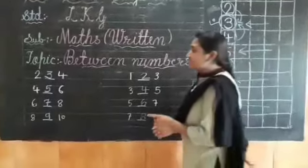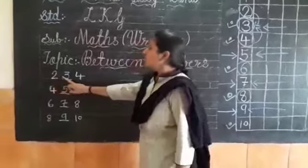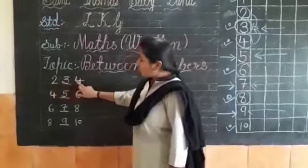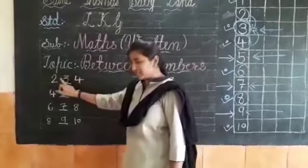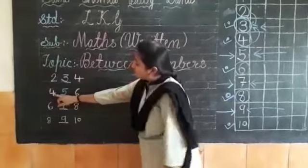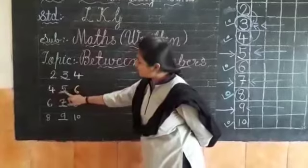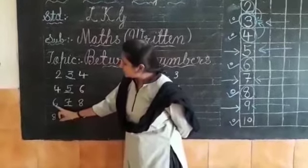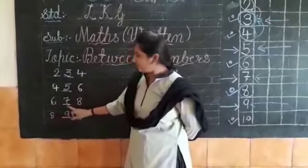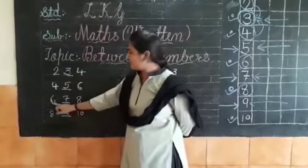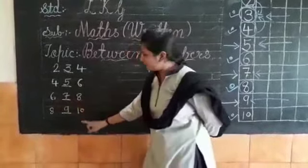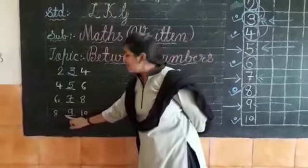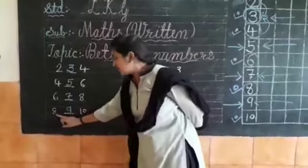Let's repeat this exercise. In between of two and four, which number is there? Three — because after two is three, and before four is three. Our answer is three. In between of four and six — four, five, six — our answer is five. In between of six and eight — six, seven, eight — seven is in between. In between of eight and ten — eight, nine, ten — nine is in between.